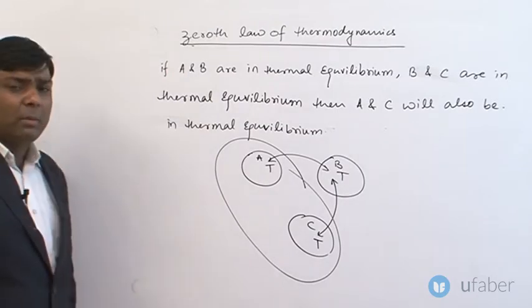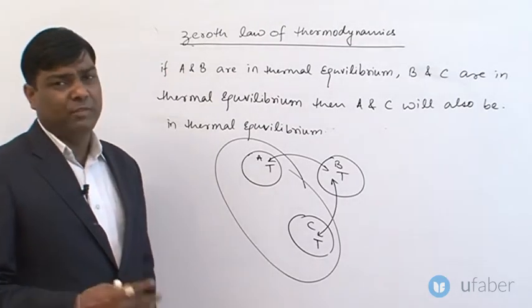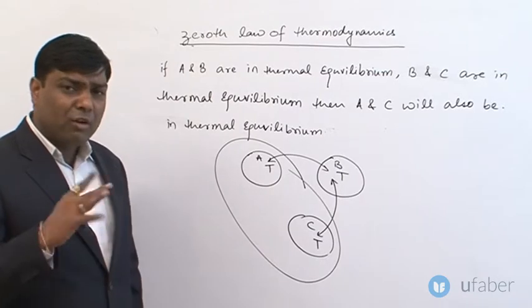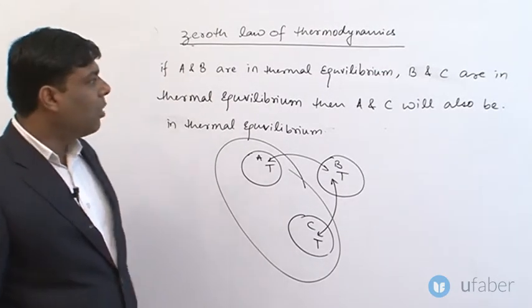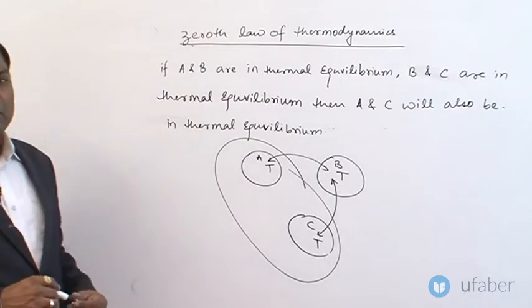And in thermal equilibrium, there is no temperature difference between two bodies, or the temperature of two bodies is the same. And there is no heat flow from one body to another body. So, this is the zeroth law. Next part, let's see.